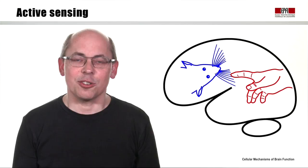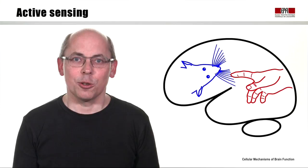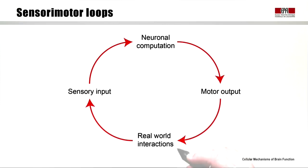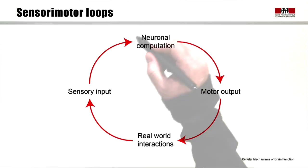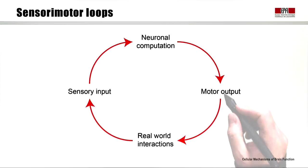The sense of touch and vision are dominated to a large extent by self-generated movements that form the basis of active sensing, where we select the type of sensory information we want to obtain by making specific goal-directed movements. We can think of the basis of behavior as a sensory-motor loop, which neither has a beginning nor an end, but we can enter it at any point. Neuronal computations are influenced by sensory information being gathered, and that generates motor output behavior.